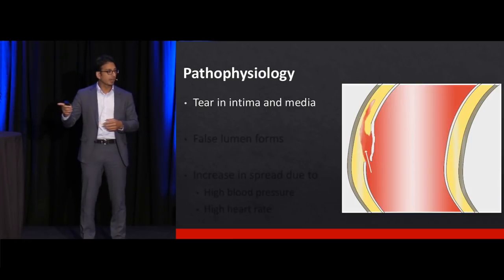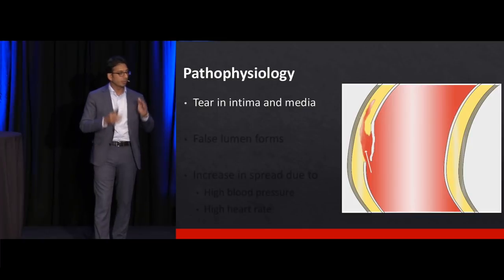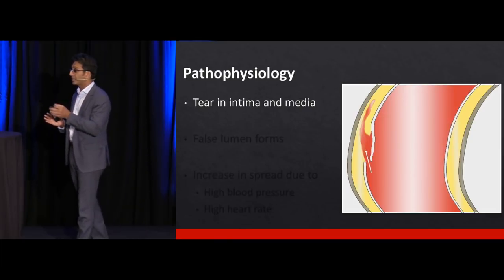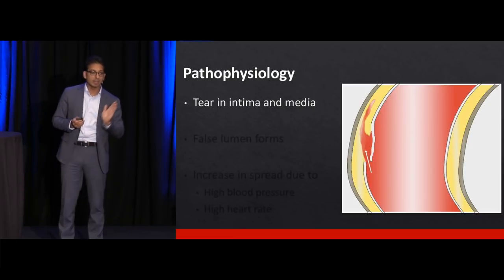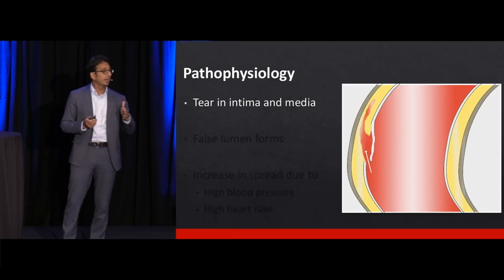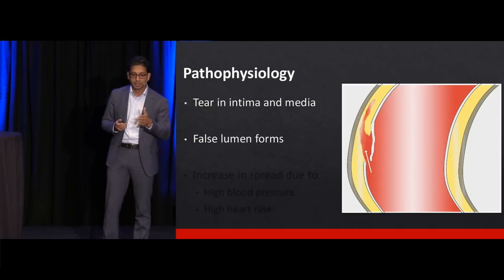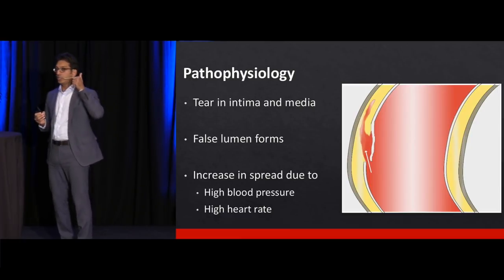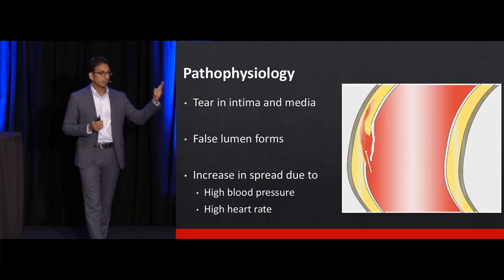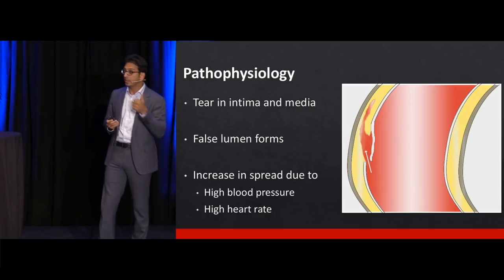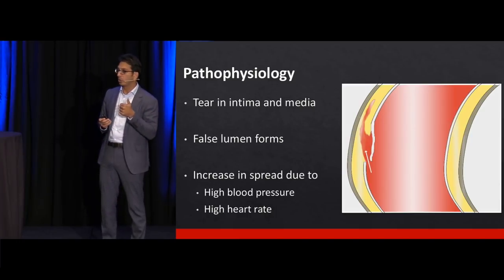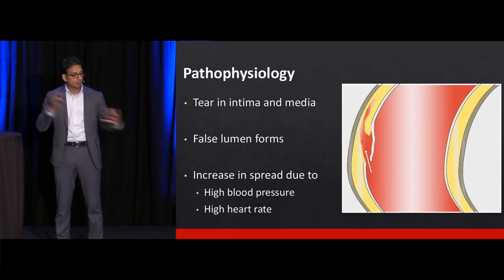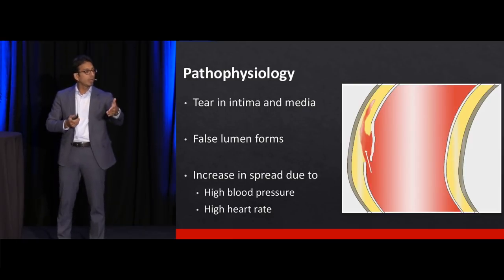Pathophysiology: there's a tear in the tunica intima, the innermost layer of major arteries. That tear gets into the tunica media — the elastic layer of the aortic wall — allowing blood to dissect between the two layers of the tunica media. A false lumen forms and expands. Each time the heart pumps and the blood pressure rises with each beat, more blood goes into that false lumen. That is why we need to control blood pressure and heart rate.